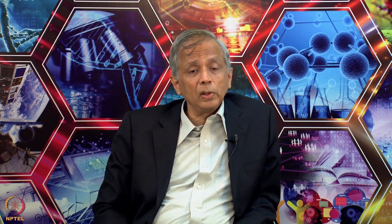One interesting point is that Babylonians used this method to find square roots 3500 years ago. They did not know about tangents or that this could be used to find roots of any function for which we can evaluate f and f'. For that generalization we had to wait for Newton and Raphson. But getting square roots as accurately as desired 3500 years ago is an amazing achievement.